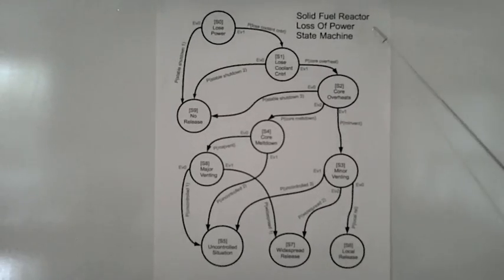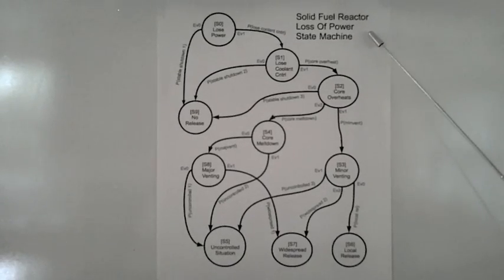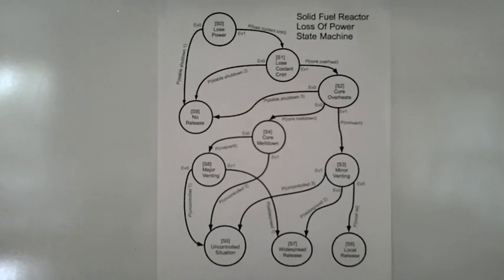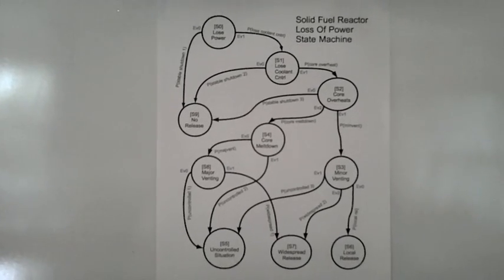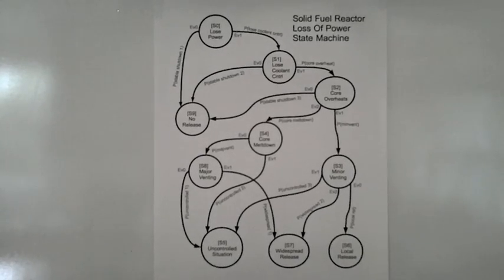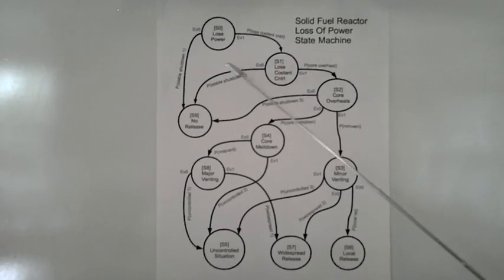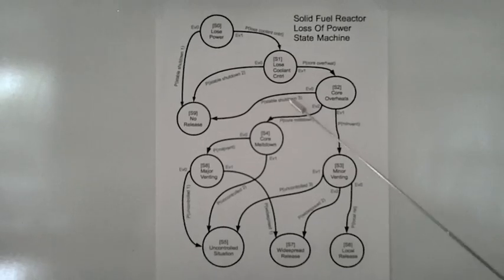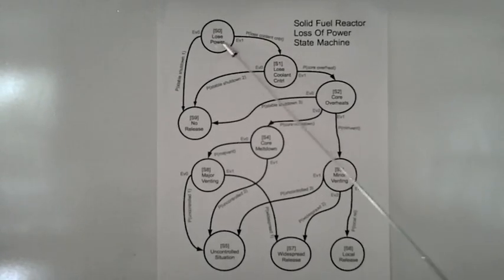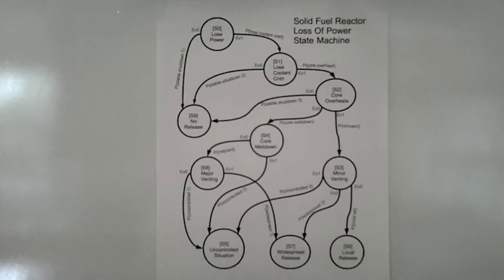I constructed two state machines for each reactor. This state machine is for the solid fuel reactor. State machines are, in general, useful tools to help simulate a complex system's behavior. The circles are states that the system could be in, and the arrows represent the probabilities of events occurring and moving to the next state.